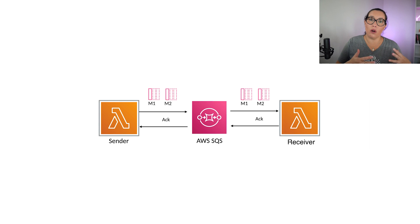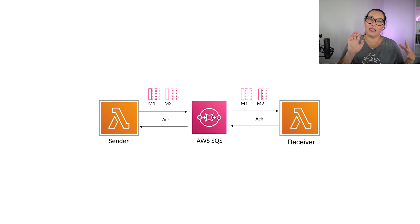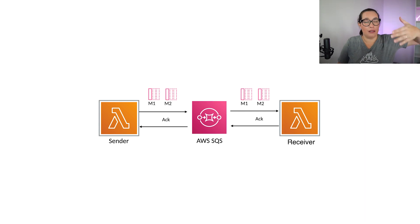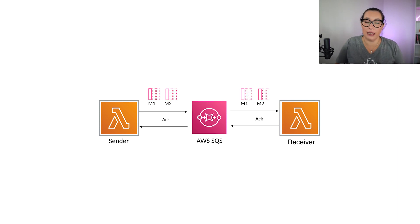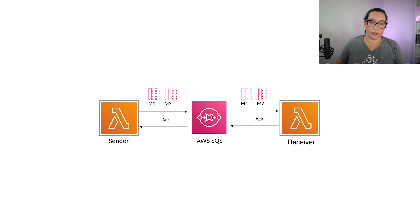A dead letter queue is a place where all messages that cannot be delivered are sent. In the case of this queue, you will try to send messages to the second Lambda function. But if for any reason a message is poisoned or bad, or the second function is not available, then after a number of retries that you define, the message will be sent to the dead letter queue where they wait until you reprocess them. You can have automated mechanisms or alarms to let you know when there is an error.